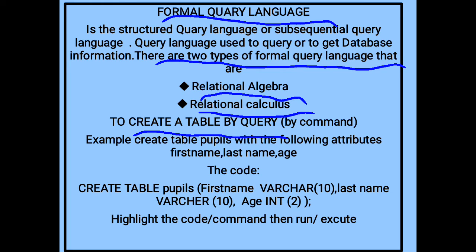Database software examples include Oracle or MySQL Community Edition and other database software. Using these, you are able to create a table by query or by command. Through the form of query language, for example, create a table called 'pupils' with the following attributes: first name, last name, and age. These are fields or attributes. Through the form of query language, we are able to use the code or command to run in order to obtain output.